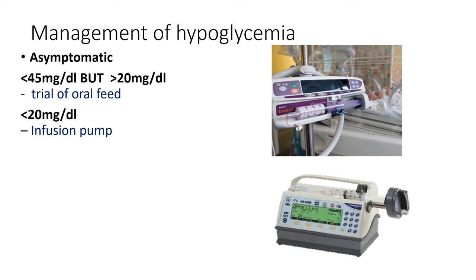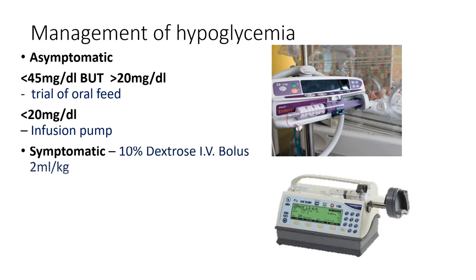IV dextrose is given through an infusion pump to prevent volume overload, since manually controlling the amount is very difficult. For symptomatic patients, we give 10% dextrose IV bolus at a dose of 2 mL/kg.